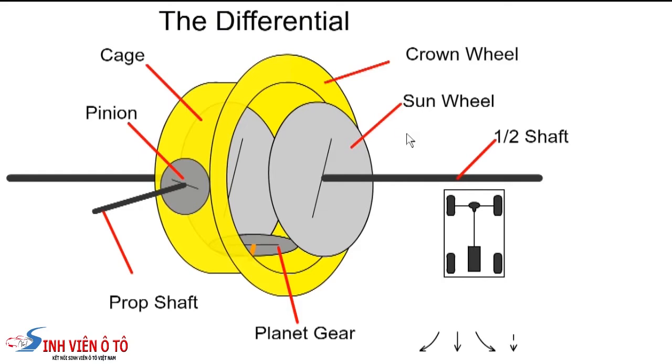With an open differential, the half shaft has the wheel attached at one end and the sun gear at the other. The sun gears are meshed with a planet gear which can rotate around the sun gear. Normally there are two planet gears, but we only show one for clarity.